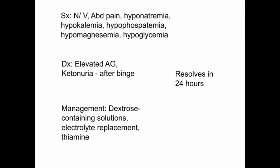Labs reveal an elevated anion gap and ketones in the blood and urine, usually appearing after a period of binge drinking. Management of AKA includes infusion of dextrose-containing solutions, electrolyte replacement, and thiamine supplementation. This typically resolves in 24 hours with appropriate treatment.